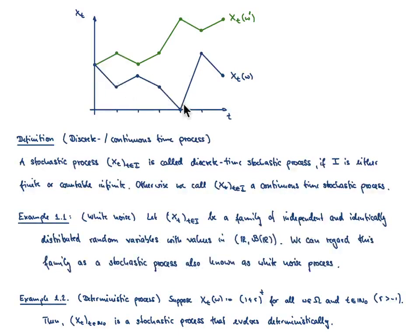For one choice of ω you might get a blue curve, and changing ω gives a completely different curve. If the index set is discrete, these are just discrete values, and the lines in between are for illustration. In case the index set is continuous, you could have a continuous path. There is no reason why it should be continuous — it could also be piecewise constant with jumps in between.